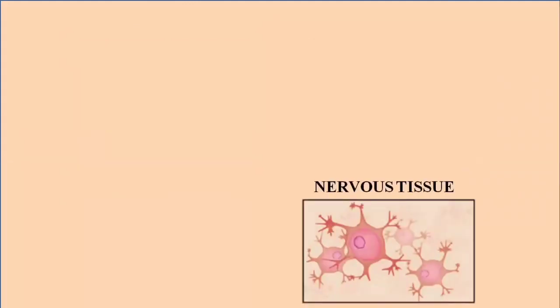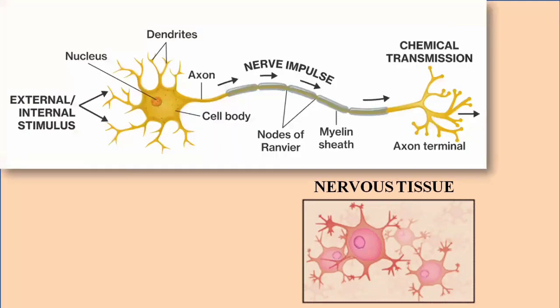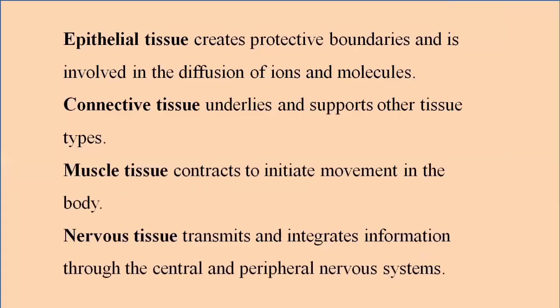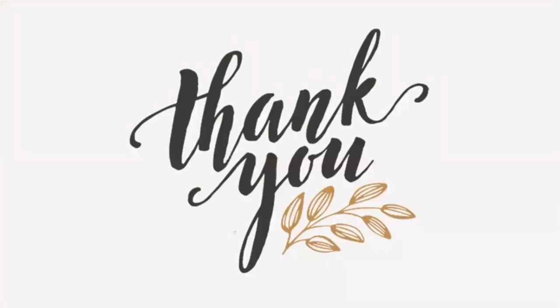The fourth type of tissue is nervous tissue. Nervous tissue forms the nervous system and is involved in the formation of neurons and the spinal cord. All the activities carried out by the human body occur through the transmission of nerve impulses, which are conducted by nervous tissues. These are the four different types of tissues, and in the next lectures we are going to study each type in detail.